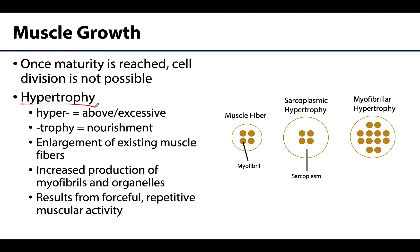This hypertrophy is possible through the increased production of structures within the cell. Most notably, the myofibrils — which we'll talk about in more detail in subsequent videos. You could also have other portions of the cell enlarge or increase, including the sarcoplasm, the sarcoplasmic reticulum, mitochondria, and other organelles — so an increased production of these organelles.